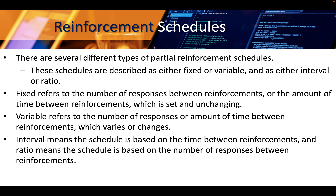With a variable interval reinforcement schedule, the person or animal gets reinforcement based on varying amounts of time, which are unpredictable — you never know when you're going to catch a fish. For example, Bill loved to ski but only when there was fresh powder. Sometimes Bill was able to ski every weekend, and other winters it was five or six weeks between skiing expeditions. Variable interval reinforcement.